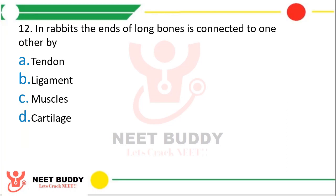Question: In rabbits, the ends of long bones are connected to one another by — option A, tendon; option B, ligament; option C, muscles; option D, cartilage. The correct answer is option B, that is ligament. And what does tendon do? It connects bone to a muscle.